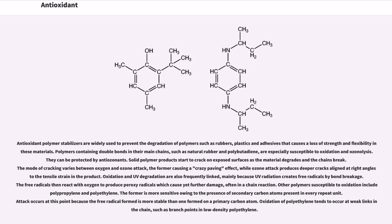Antioxidant polymer stabilizers are widely used to prevent the degradation of polymers such as rubbers, plastics and adhesives that causes a loss of strength and flexibility in these materials. Polymers containing double bonds in their main chains, such as natural rubber and polybutadiene, are especially susceptible to oxidation and ozonolysis. They can be protected by anti-ozonants. Solid polymer products start to crack on exposed surfaces as the material degrades and the chains break. The mode of cracking varies between oxygen and ozone attack, the former causing a crazy-paving effect, while ozone attack produces deeper cracks aligned at right angles to the tensile strain in the product.